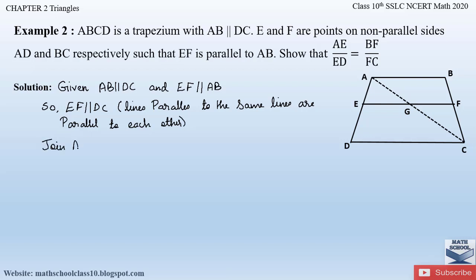Now there are two triangles formed: triangle ADC and triangle CAB. We will take each of these triangles and apply the Basic Proportionality Theorem, that is Theorem 2.1.